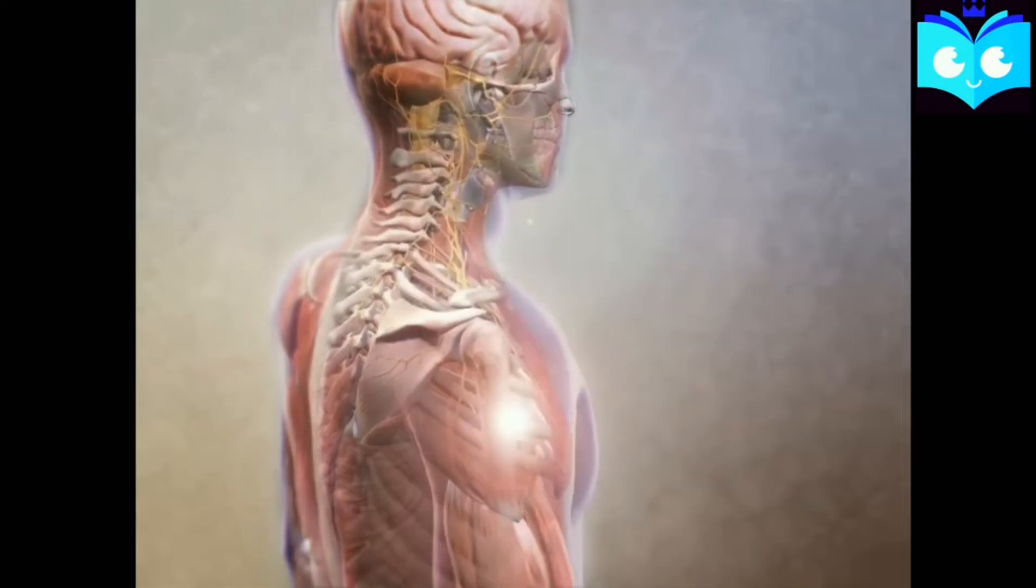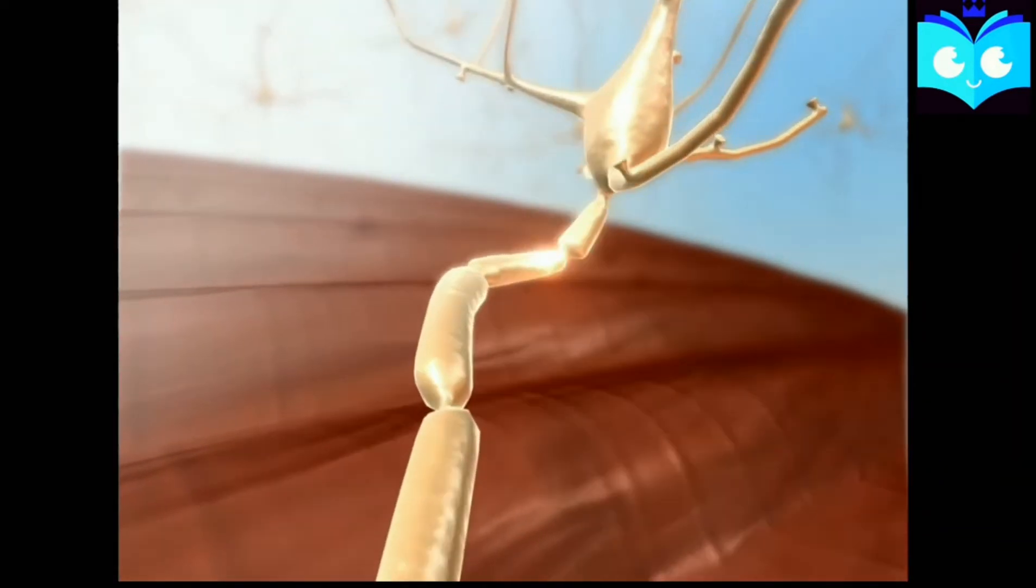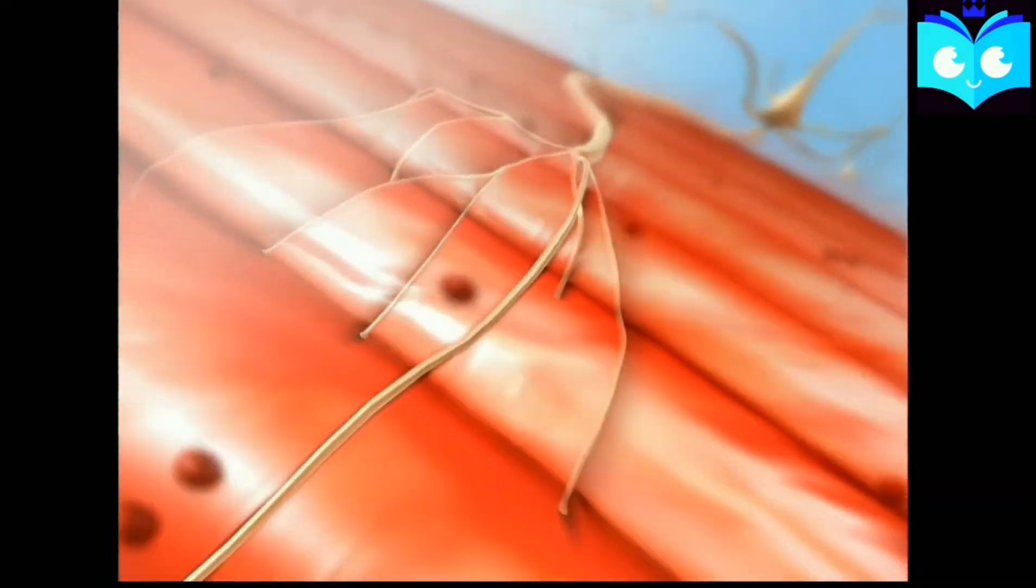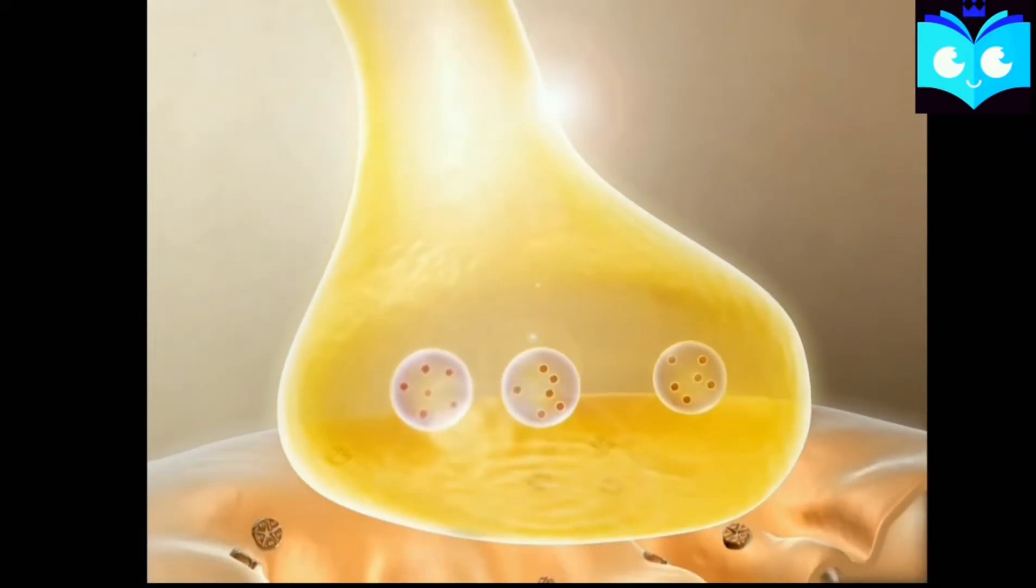The signal of muscle contraction from the brain travels by depolarization in the neurons. When the signal reaches the neuromuscular junction, it opens the calcium channels present on the neuron. This leads to influx of calcium ions inside the neuron.